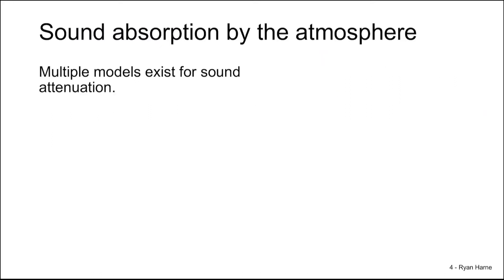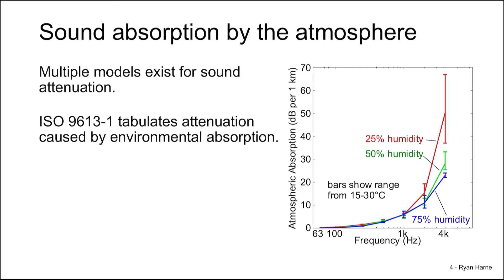But does the sound attenuate when it's traveling over that same distance? There are many models for sound attenuation in the environment, and we often don't use them. And there's good reason why. ISO 9613-1 tabulates environmental absorption numbers for sound attenuation in the atmosphere. It's quantified in terms of decibels per kilometer. So let's take an example.